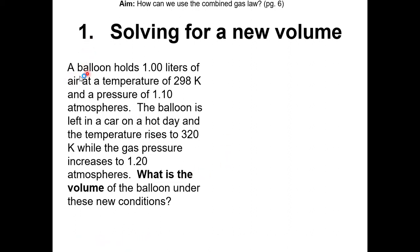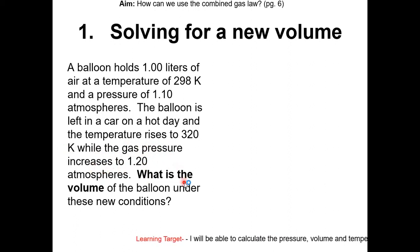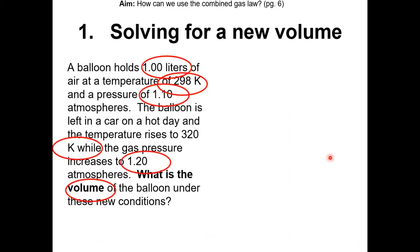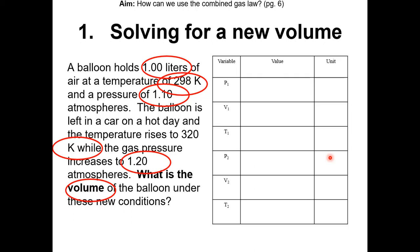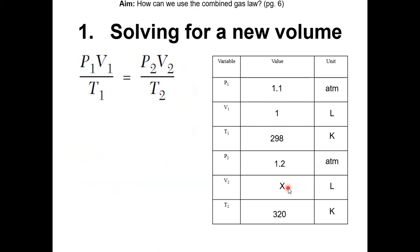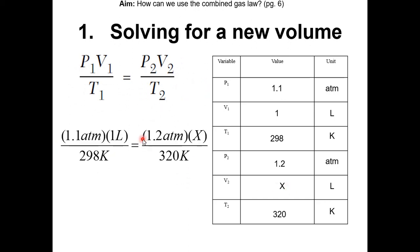Question 1: A balloon holds 1 liter of air at 298 Kelvin and 1.1 atmosphere. The balloon is left in a car on a hot day and the temperature rises to 320 Kelvin while the gas pressure increases to 1.2 atmosphere. What is the new volume? The first step is to identify what is given — initial P, V, and T — and what we're solving for, which is the new volume x. Plug into the combined gas law equation, use a calculator, and solve: x equals 0.98 liters.